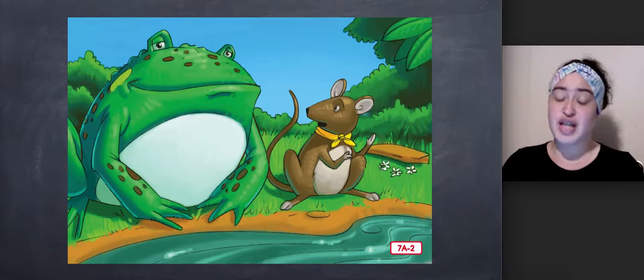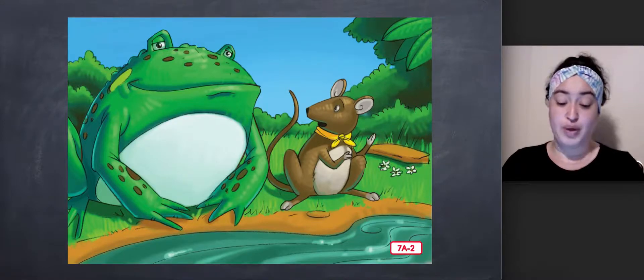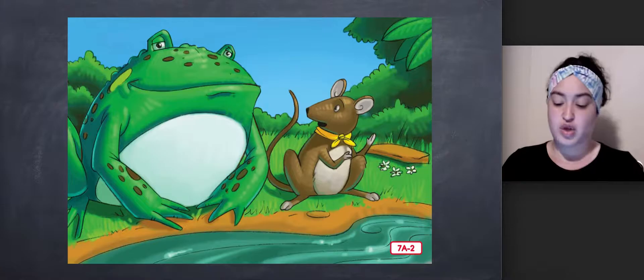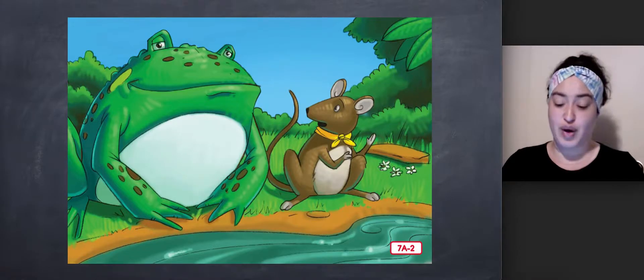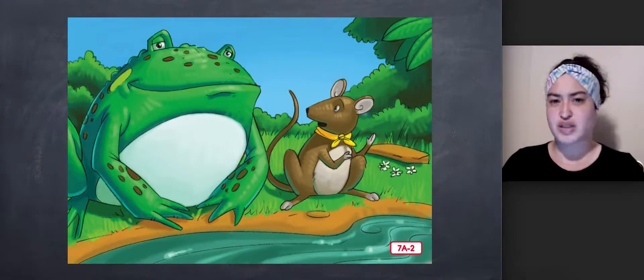This is your lucky day, exclaimed the frog. I am a magic frog, and I will help you. I name you Jumping Mouse. You will soon discover that you can jump higher than you have ever jumped before. Follow me, Jumping Mouse, and I will take you across the sparkling river. How will the gift of jumping help Jumping Mouse cross the river?